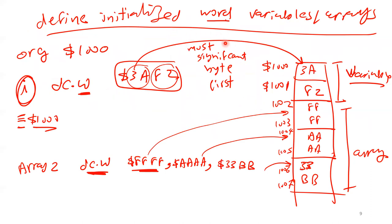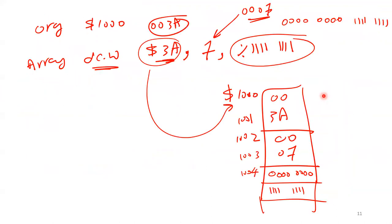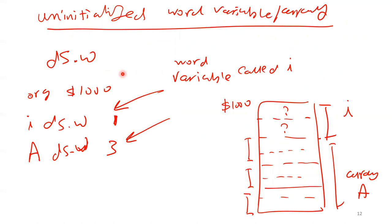For word variables or word arrays, everything is the same with two differences: you use '.W' instead of '.B', and every variable or element takes two memory locations instead of one. We store the most significant byte first — for example, 3AF2 occupies two locations with 3A first then F2. An array of words with three elements takes six locations total, two per element.